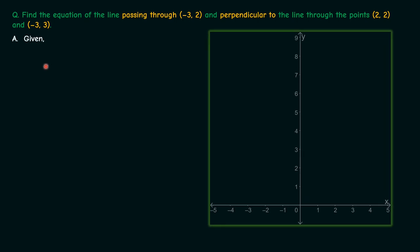Here we are first given three points. Let's call them P(-3, 2) and Q(2, 2) and finally R(-3, 3). Now it is said that a line passes through the points (2, 2) and (-3, 3), that is Q and R.